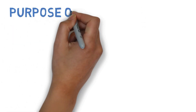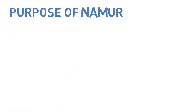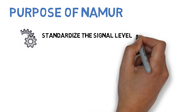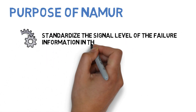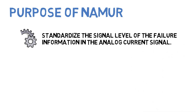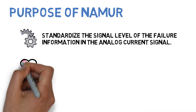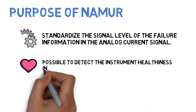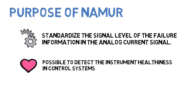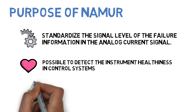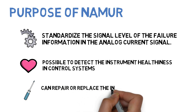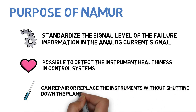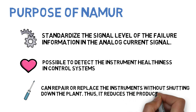The purpose of NAMUR is to standardize the signal level of the failure information in the analog current signal, making it possible to detect instrument healthiness in control systems, and to repair or replace instruments without shutting down the plant. Thus, it reduces production loss.